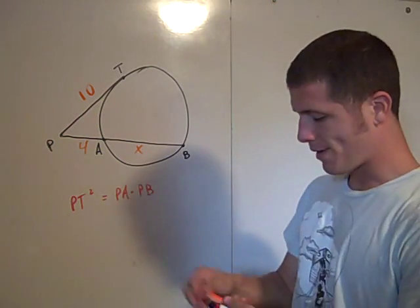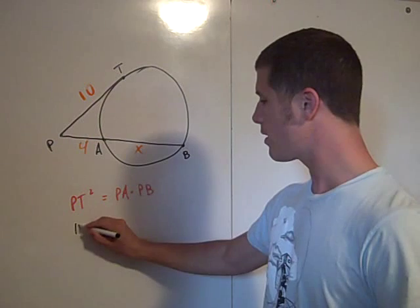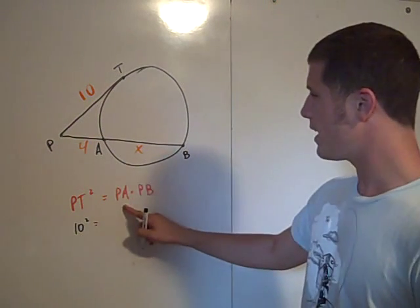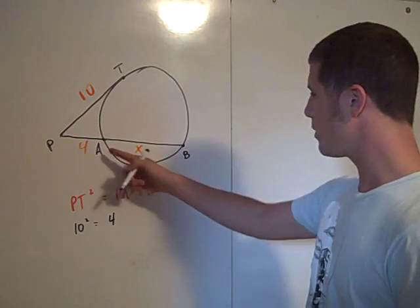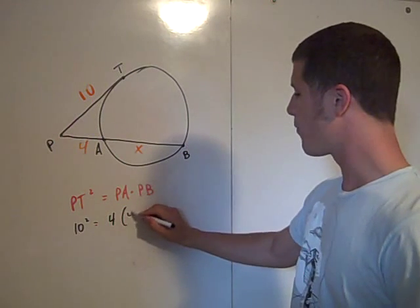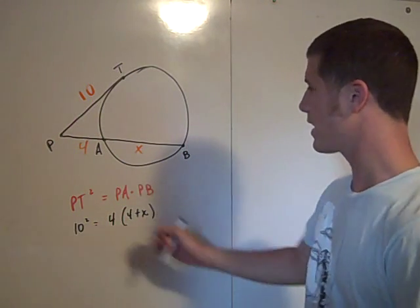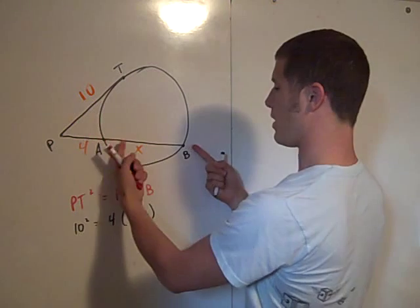Well PT squared is, that's 10 squared. PA here is 4 and PB is 4 plus x. This is PB, that's 4 plus x.